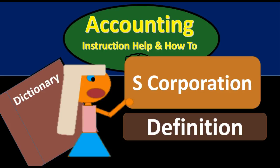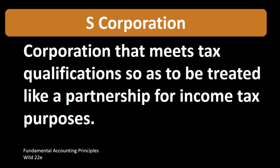Hello, in this lecture we will define S-Corporation. According to Fundamental Accounting Principles Wild 22nd Edition, the definition of S-Corporation is a corporation that meets tax qualifications so as to be treated like a partnership for income tax purposes. Therefore, an S-Corporation is going to be a type of corporation, but we're trying to get the best of both worlds from something like a partnership and something like a corporation, as we will explain as we go.